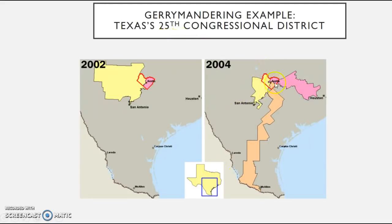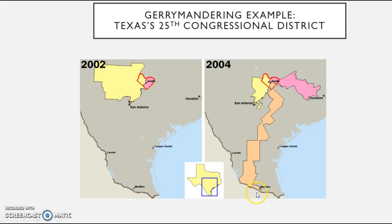There are some really funky-looking districts — look at the 25th Congressional District in Texas, which goes all the way from Austin down to McAllen, Texas. Imagine being that congressperson having to travel between Austin and McAllen to represent your constituents — that would be quite a long ride.